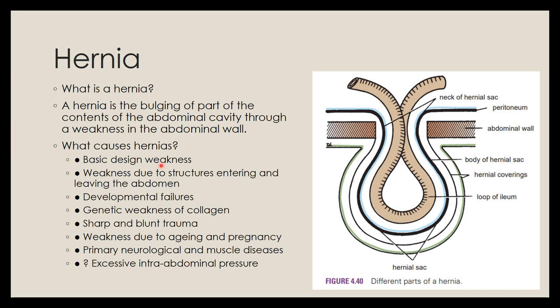Hernias can be caused by design weakness of the abdominal wall, weakness due to structures entering and leaving the abdomen, developmental failure, or genetic weakness of collagen. They can also result from sharp or blunt trauma, even after surgery, from weakness due to aging, pregnancy, or neurological and muscular diseases, and from excessive intra-abdominal pressure.